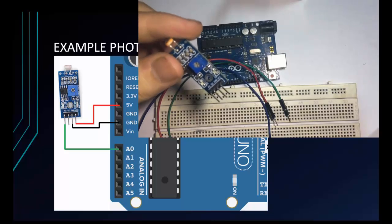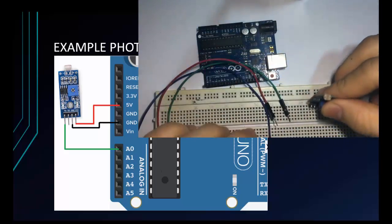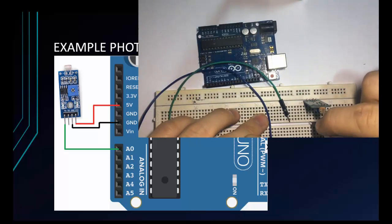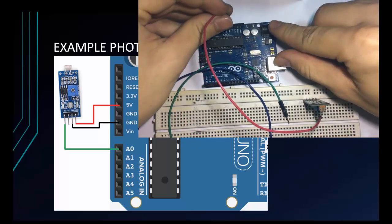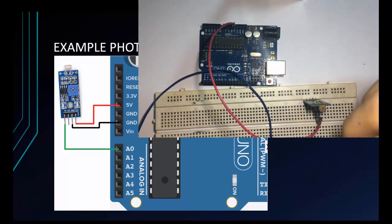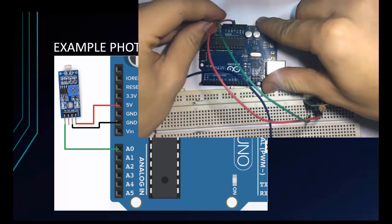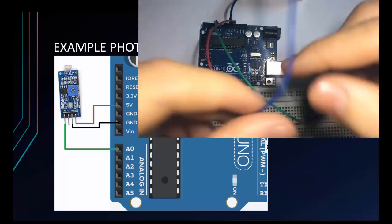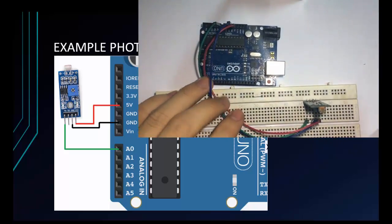This is the photosensitive sensor and it has 4 pins. Now we'll connect. The red wire is for voltage — connect to VCC. Next is A0 to the analog pin. And the last one is GND, using the green wire.